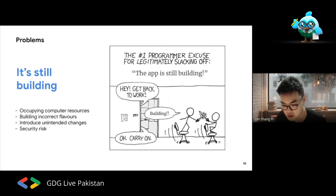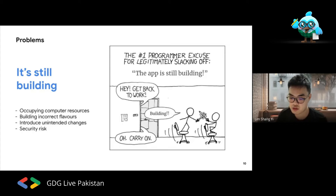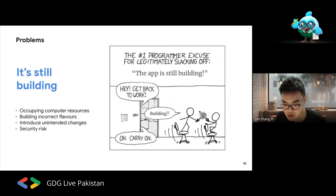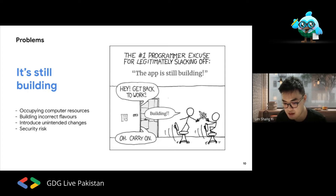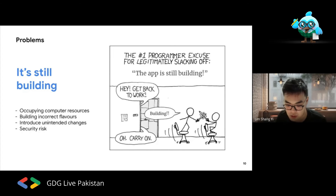You might accidentally build the wrong flavor. For example, QA wants a build for the QA environment, but you could accidentally build for a demo environment — wrong versions, wrong environments. There's also a security risk: if you're building an APK for production release, the signing key used to upload to the Play Store or App Store should not be on an individual developer's computer. If someone loses their computer or it gets compromised, that's a big issue.